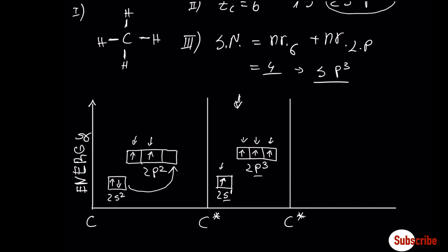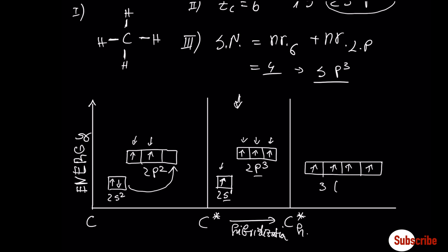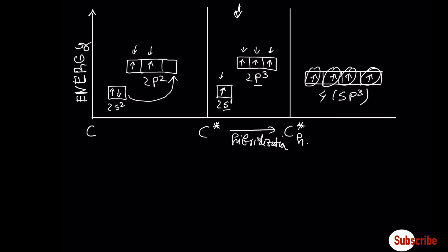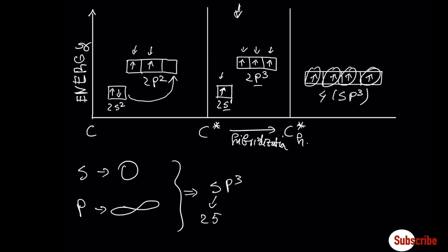So we have hybridization, and we have the formation of 4 sp3 orbitals. What does sp3 mean? sp3 means that the s orbital itself is a sphere, and the p orbital itself is a shape like a dumbbell. We have a combination that gives sp3: 25% s character and 75% p character.